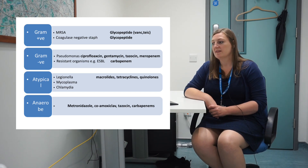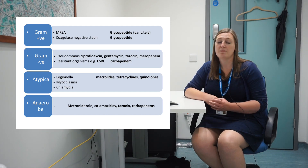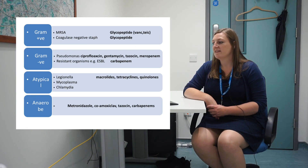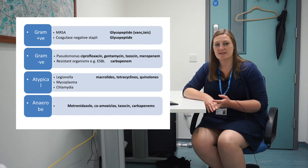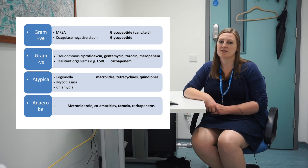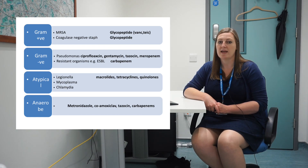If you have a gram negative infection, there are some specifics to think about as well. Might there be a Pseudomonas? Because again, this might not be covered by the empirical antibiotic in your guideline and you may need to give an additional or different antibiotic. Four good antibiotics to remember that cover Pseudomonas are: ciprofloxacin, gentamicin, tazocin, and meropenem. Also with gram negatives, there is an increasing number of resistant organisms, so consider whether you might have an extended-spectrum beta-lactamase producer - an ESBL - which may need a different antibiotic.